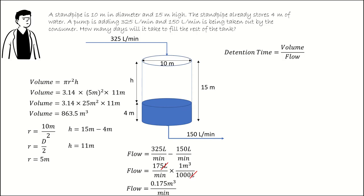Substituting these two values, our volume and our flow, into the detention time equation, 863.5 cubic meters divided by 0.175 cubic meters per minute will give us a detention time of 4,934 minutes.